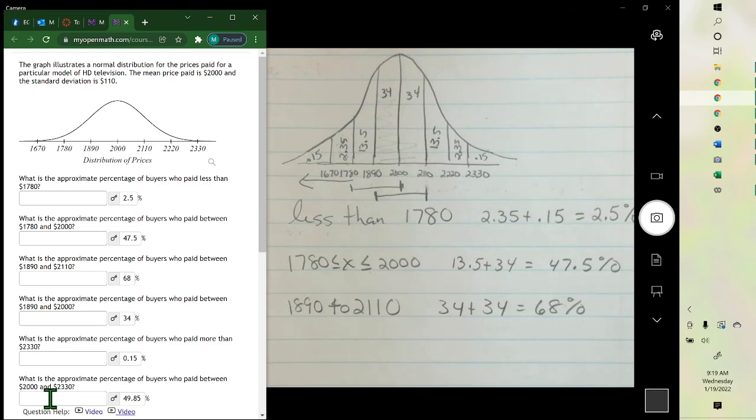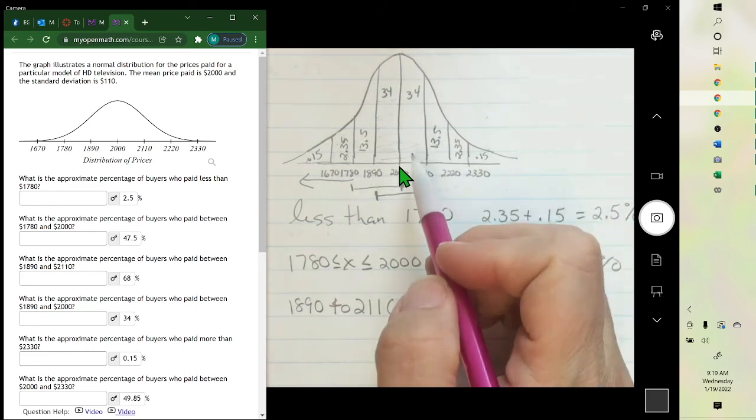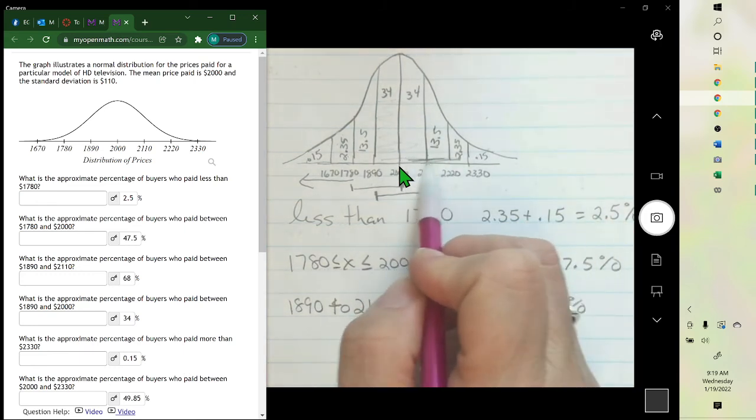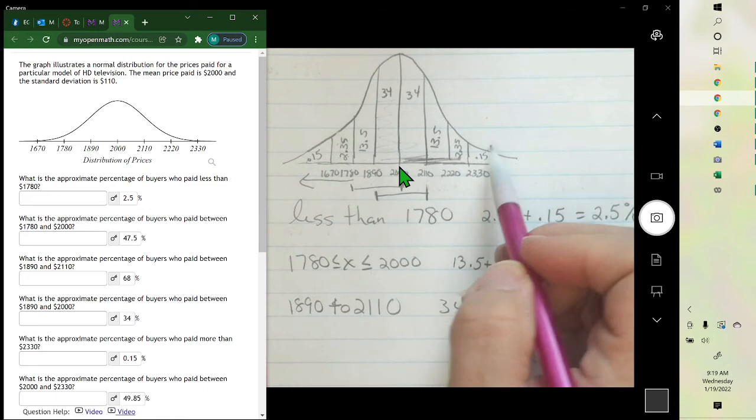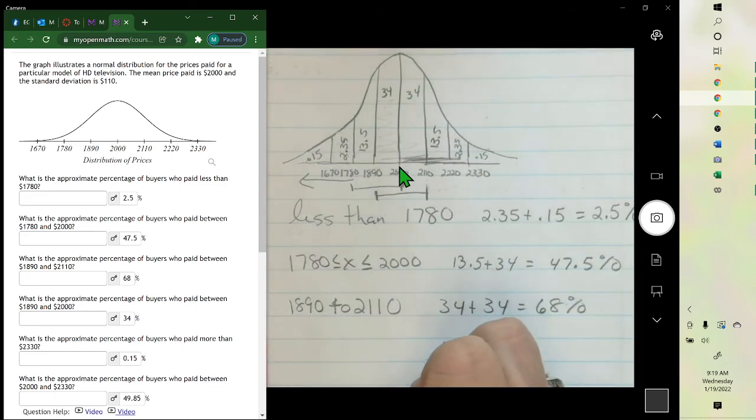The last one goes from $2,000 to $2330. So $2,000 to $2330 would be all of this. So you'd add the 34% plus the 13.5% plus the 2.35% and you'll get 49.85%.